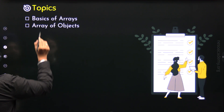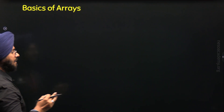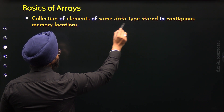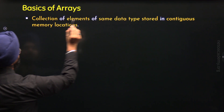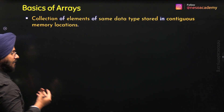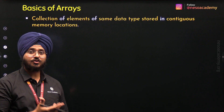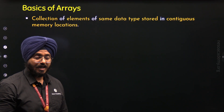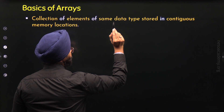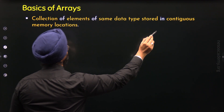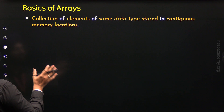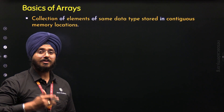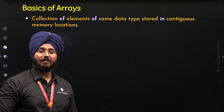Let's start with the first topic: basics of arrays. So what is an array? An array is a collection of elements of same data type stored in contiguous memory locations. You can think of an array as a list of items or elements of same data type. The data type of all the elements must be same and they must be stored in contiguous memory locations. By contiguous memory locations, I mean memory locations are adjacent to each other — it is not the case that they are scattered.